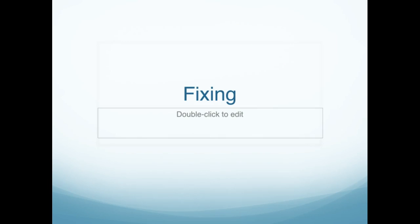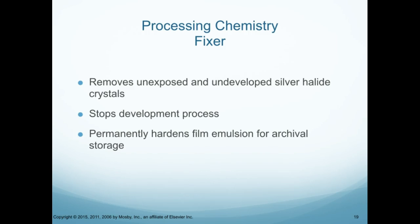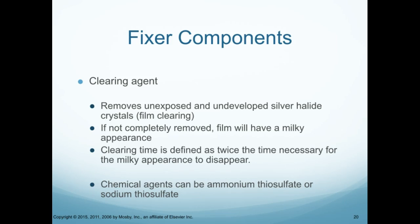The fixing agent removes the unexposed and undeveloped silver highlight crystals. It stops the development process and permanently hardens the film emulsion for archival storage. The clearing agent in the fixer removes unexposed and undeveloped silver highlight crystals — also called film clearing. If not completely removed, the film will have a milky appearance. Clearing time is defined as twice the time necessary for the milky appearance to disappear. The chemical agents can be ammonium thiosulfate or sodium thiosulfate.